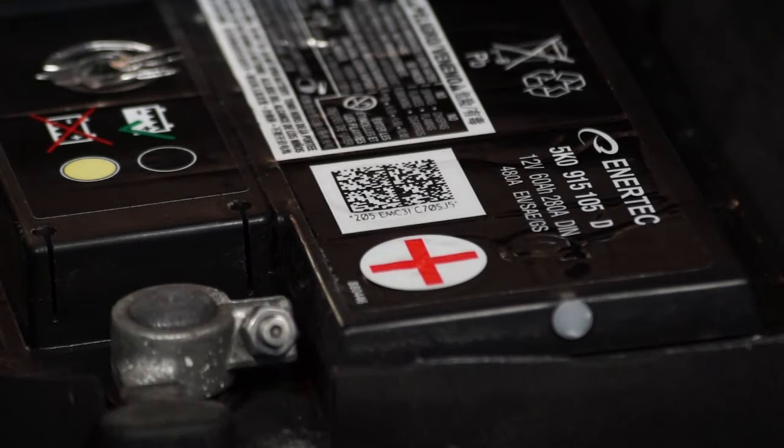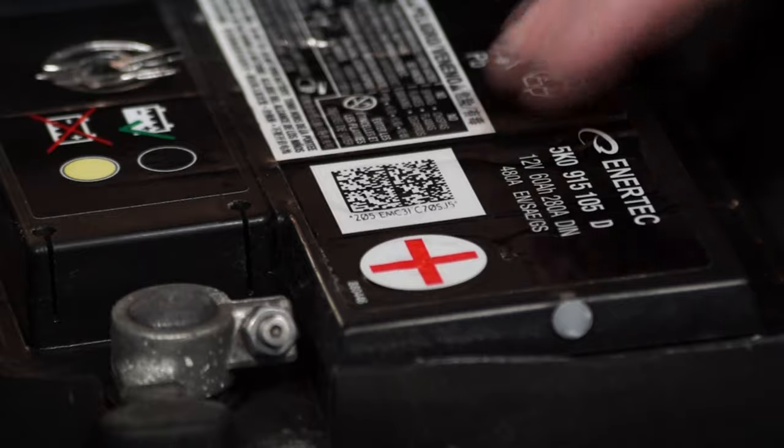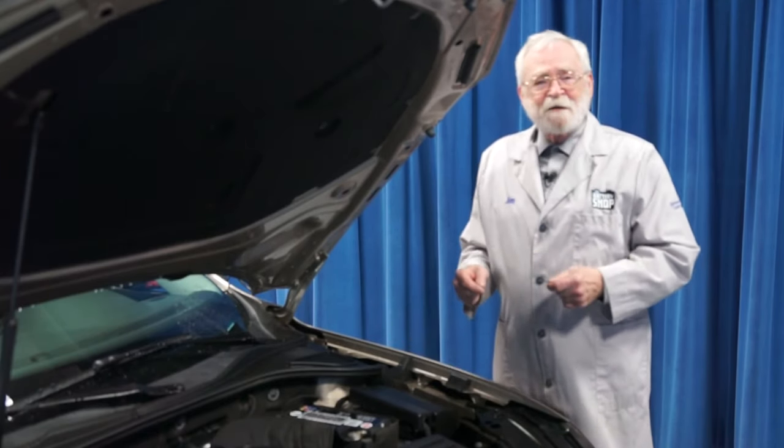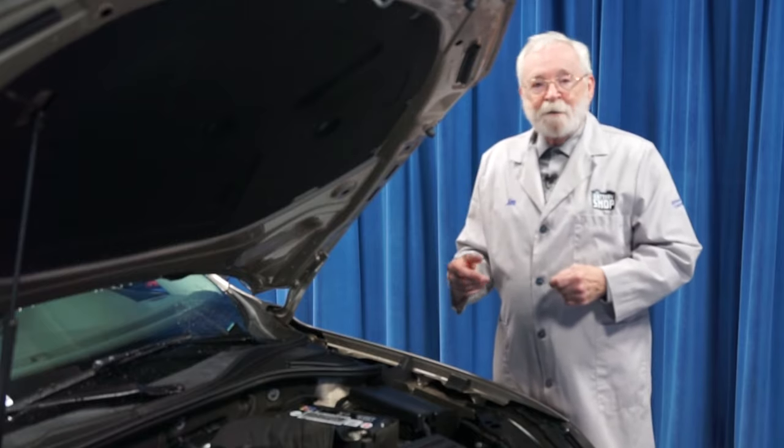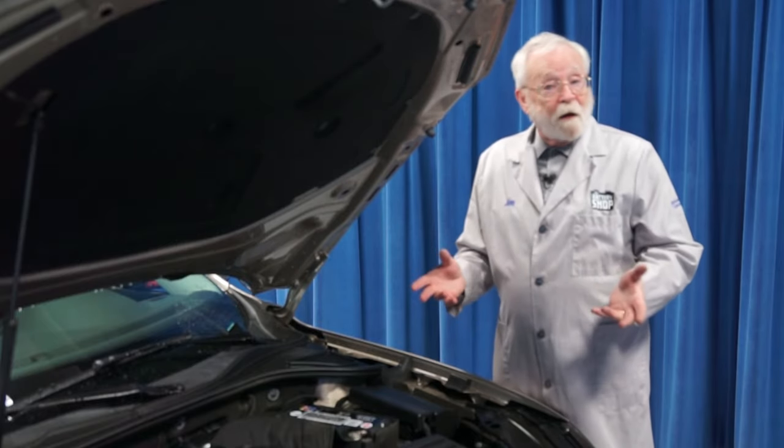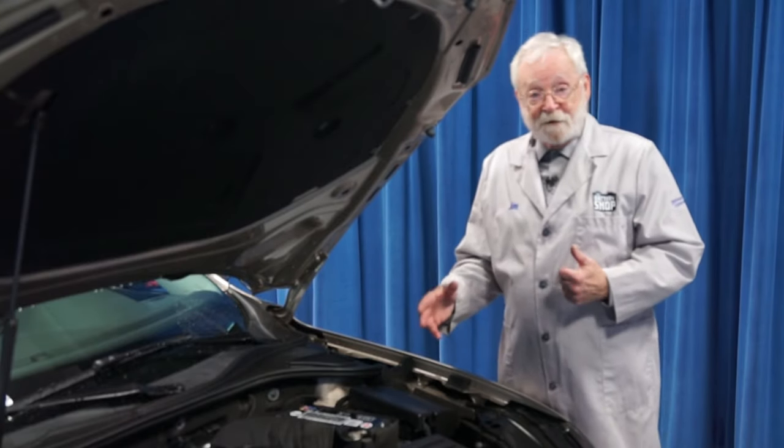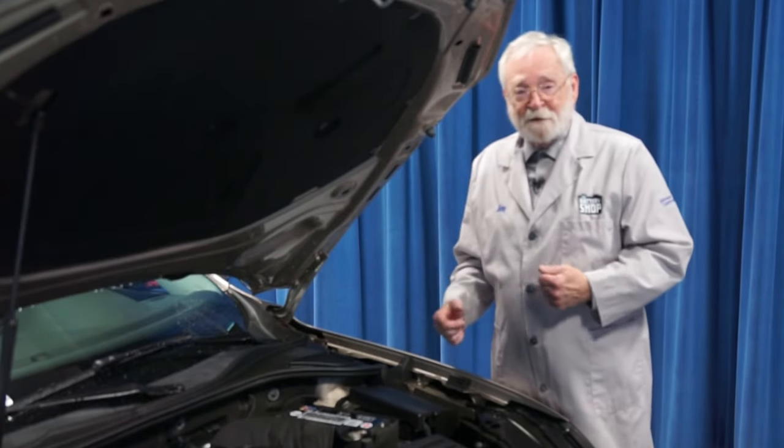So when you replace the battery in a vehicle like this, you actually have to update the information in the battery controller, which is in the computer. And this is called battery registration, battery relearn, or sometimes it's called battery coding. You may have to refer to a service or repair manual for the proper procedure, but basically here's how it's done.